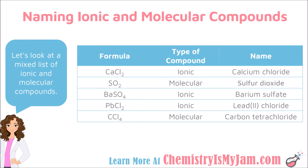In the first example, I see CaCl2. Is there a metal present? Yes — calcium is a metal, so this is an ionic compound. Is there a transition metal, Sn, or Pb? There is not, so I simply name the cation, calcium, and make the anion end in "-ide": calcium chloride.